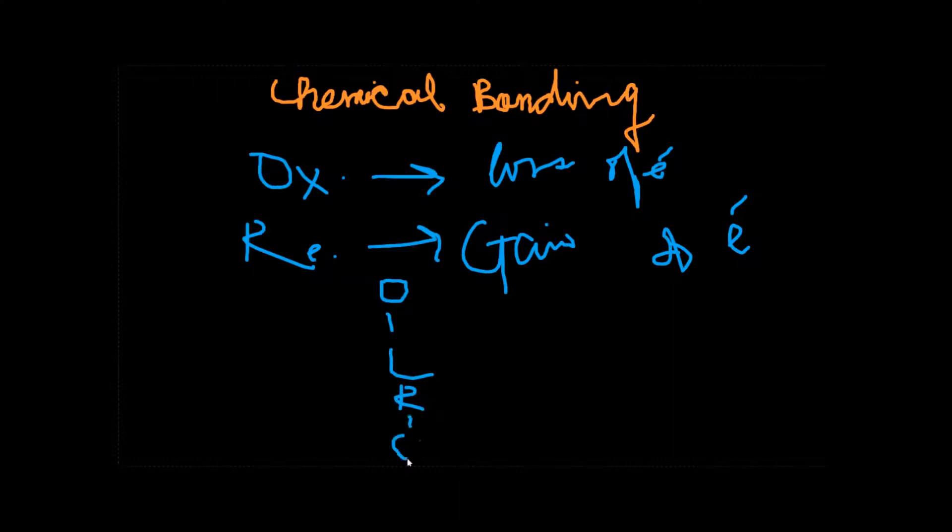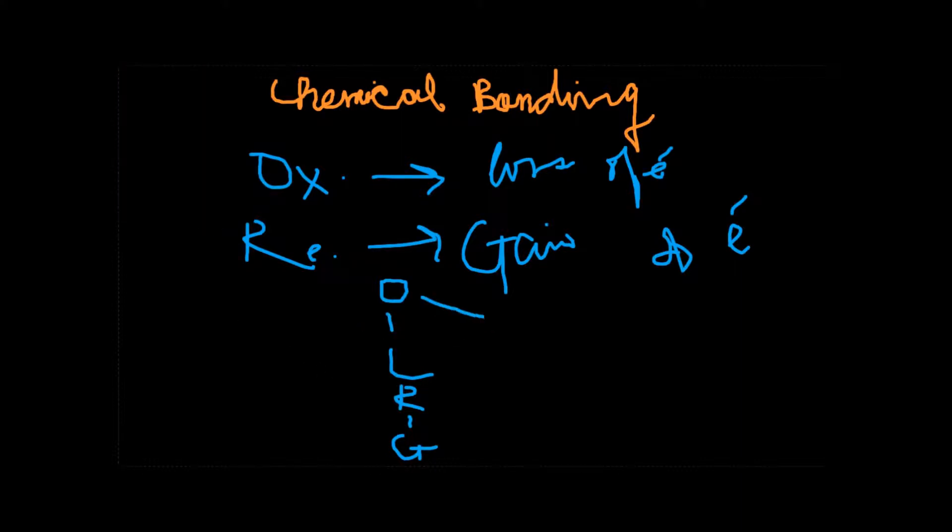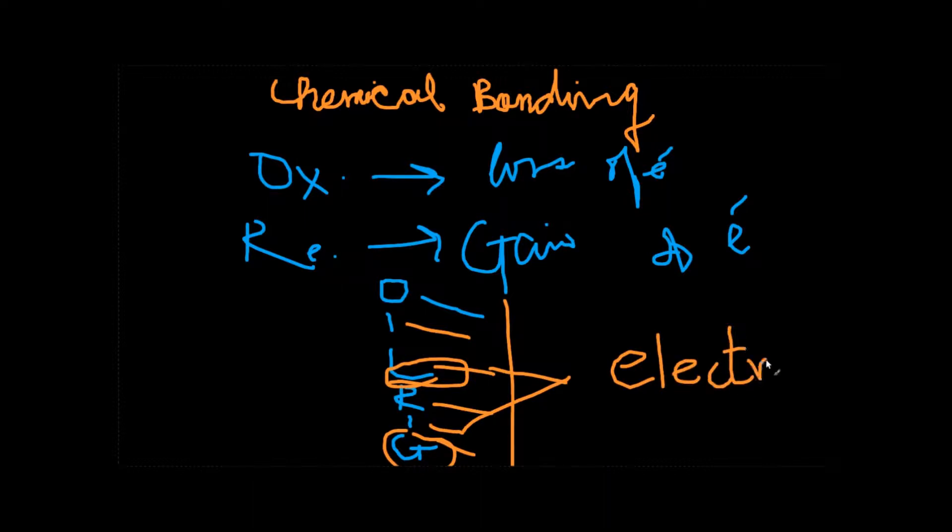This actually means oxidation is loss, reduction is gain. Please remember, whenever I'm talking about oxidation and reduction, we are only referring to electrons here. Many people confuse loss and gain of electrons with loss and gain of protons. This only refers to loss and gain of electrons. This would be a very easy way of remembering your basics.